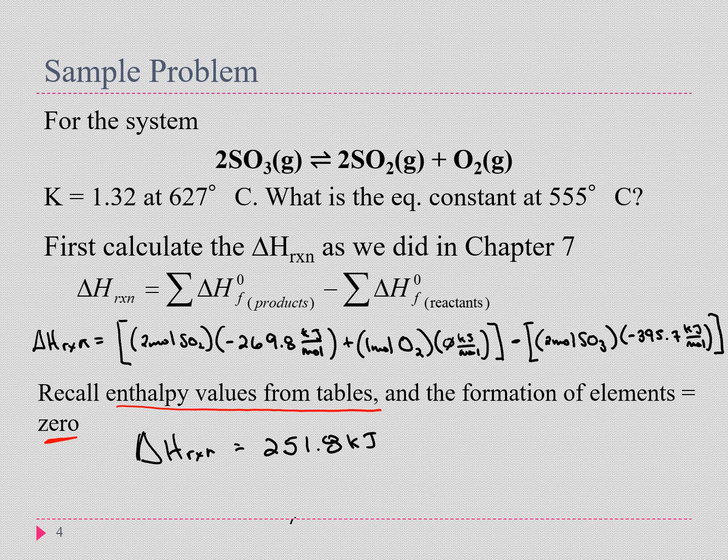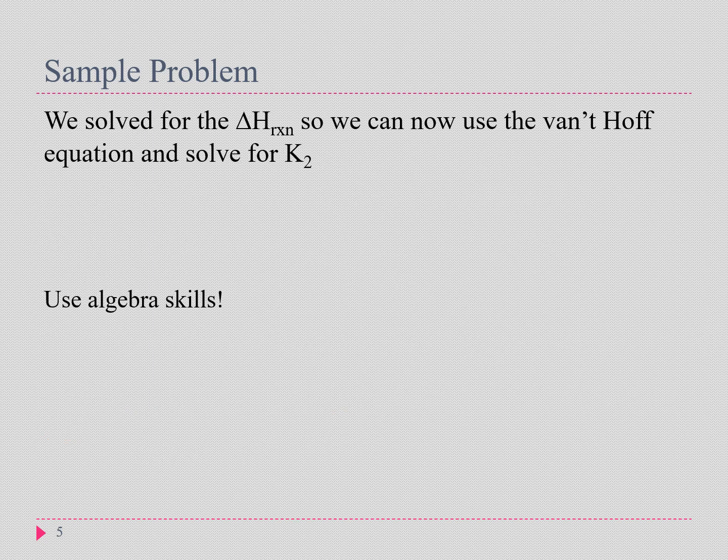Now we have the enthalpy change. Now we can use that in our van't Hoff equation on our next slide to solve for the equilibrium constant at 555 degrees Celsius. Let's set up our van't Hoff equation, which is the natural log of K2 over K1 equals our delta H over R times one over T1 minus one over T2.